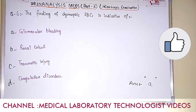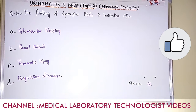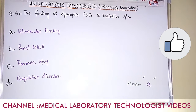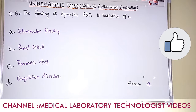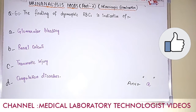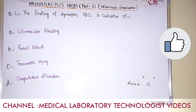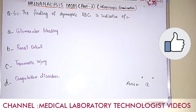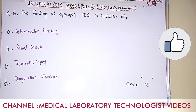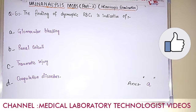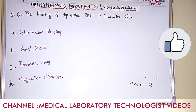Question number 6. The finding of dysmorphic RBCs is indicative of. Dysmorphic means you will see different shapes of RBCs in microscopy depending on the source of the problem — not one particular shape. Option A: glomerular bleeding. Option B: renal calculi. Option C: traumatic injury. Option D: coagulation disorder. The answer is option A, glomerular bleeding. In glomerular bleeding you will find dysmorphic RBCs, while in other cases you will mostly find normal or one particular shape of RBCs.